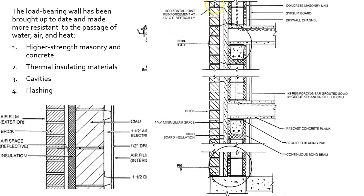Here we see the outside brick, then an air cavity, then rigid insulation, and then the CMU units. There's a bond beam right there — those two little black dots are the reinforcement. You often find bond beams at the top of walls to lock them together: one at the first floor level, one at the second floor.